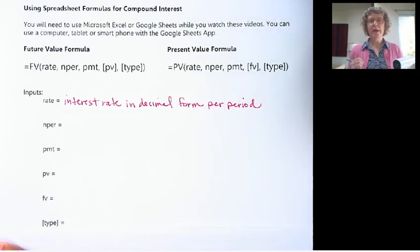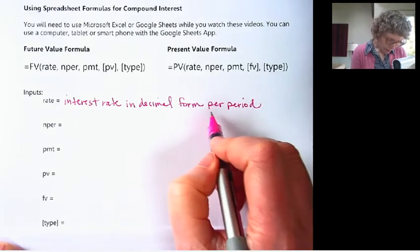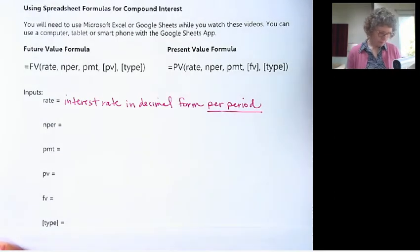And I also need to add that this is per period. So for example, if we're compounding monthly, we need to divide it by 12. So that per period is very important. And we'll go through lots of examples of this.